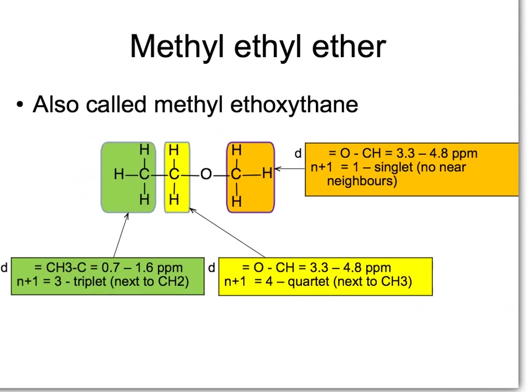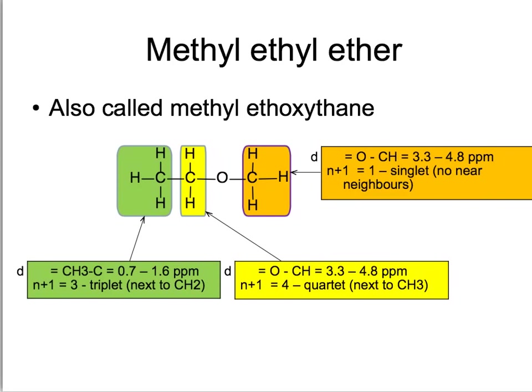The last possibility is methyl ethyl ether, also called methoxethane, which also has three different chemical environments. One CH3, here shown in green, in the range delta equals 0.7 to 1.6. This should be a triplet, as there are two protons next door. Then the next peak should be the CH2, which we've shown here in yellow, next to the oxygen atom. So it should be in the range 3.3 to 4.8. It is next to CH3, so 3 plus 1 is 4. It should be a quartet. The last peak should be the CH3, here shown in orange, which is also next to the oxygen atom, and should be in that same range 3.3 to 4.8 parts per million. It should also be a singlet, as there are no protons next door.